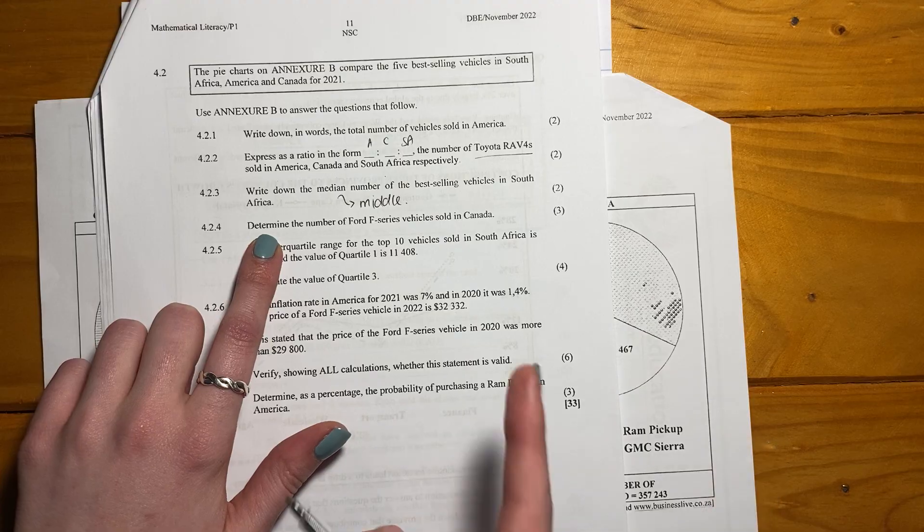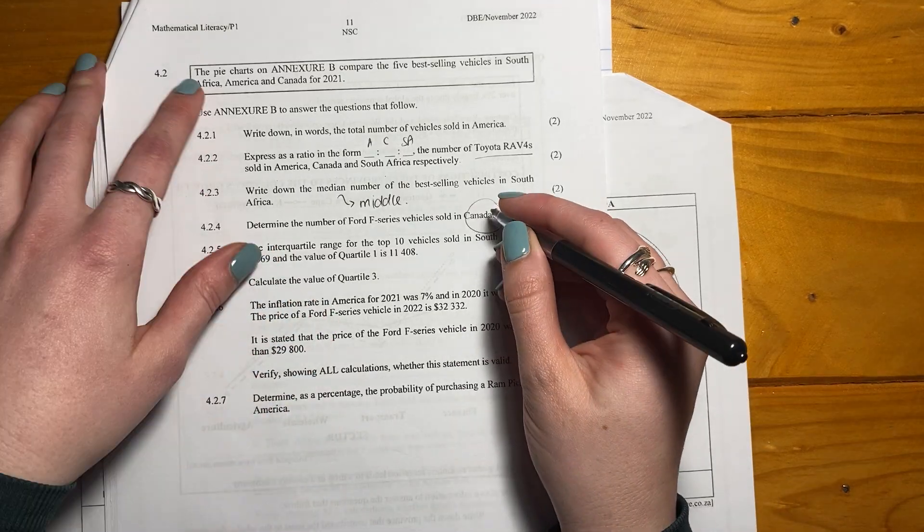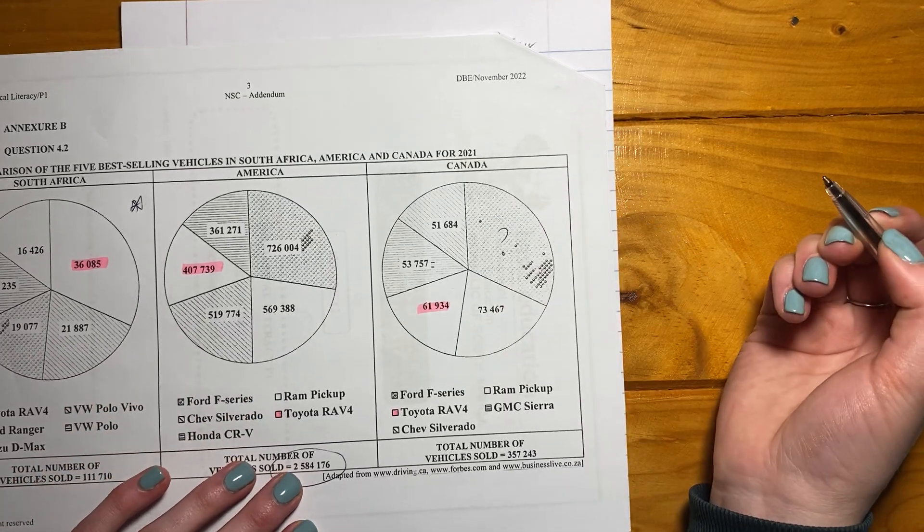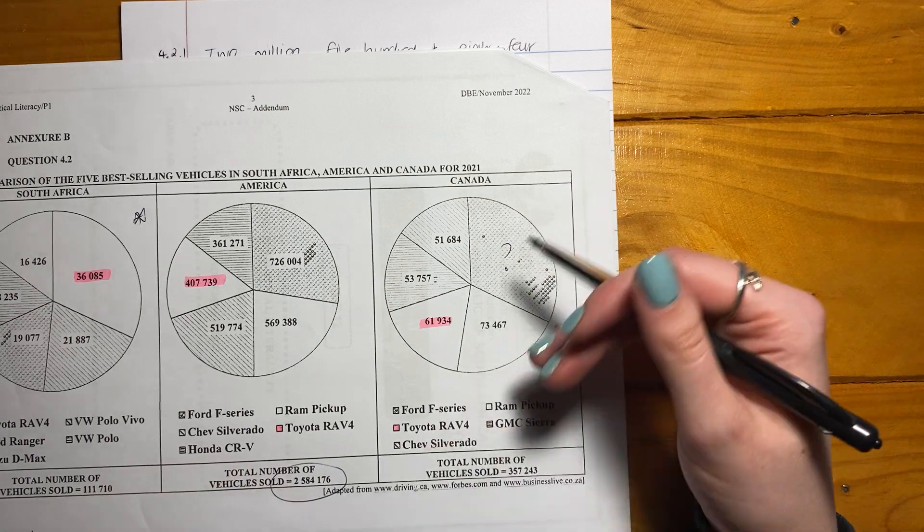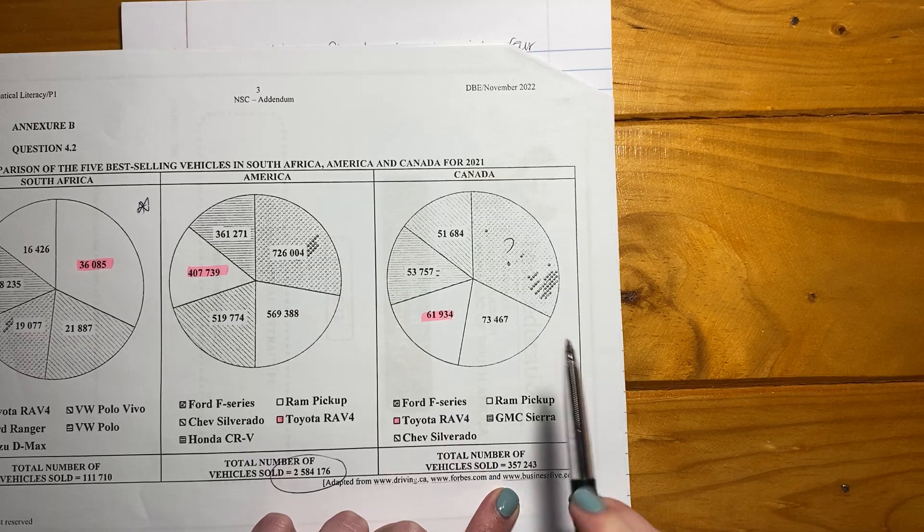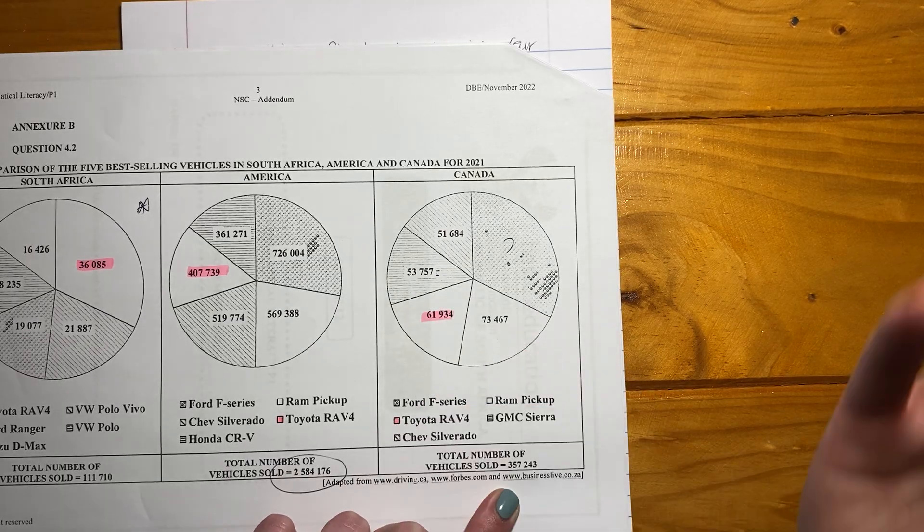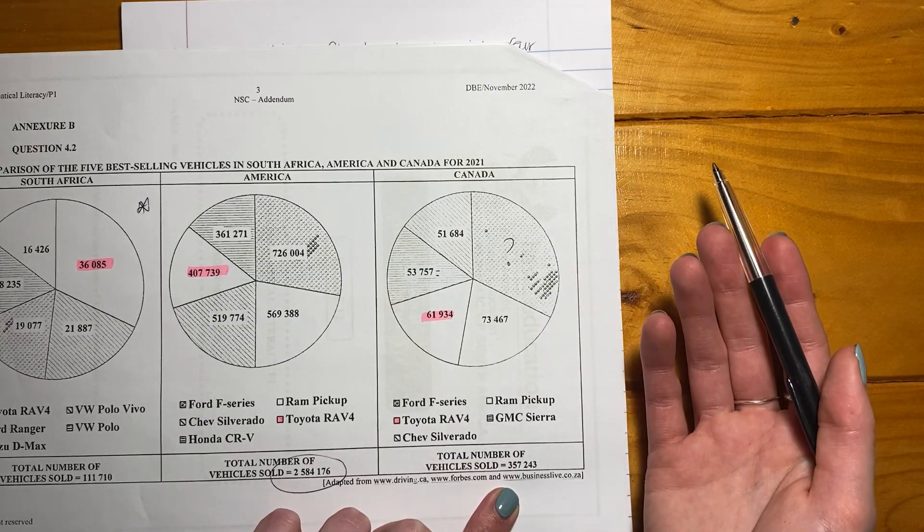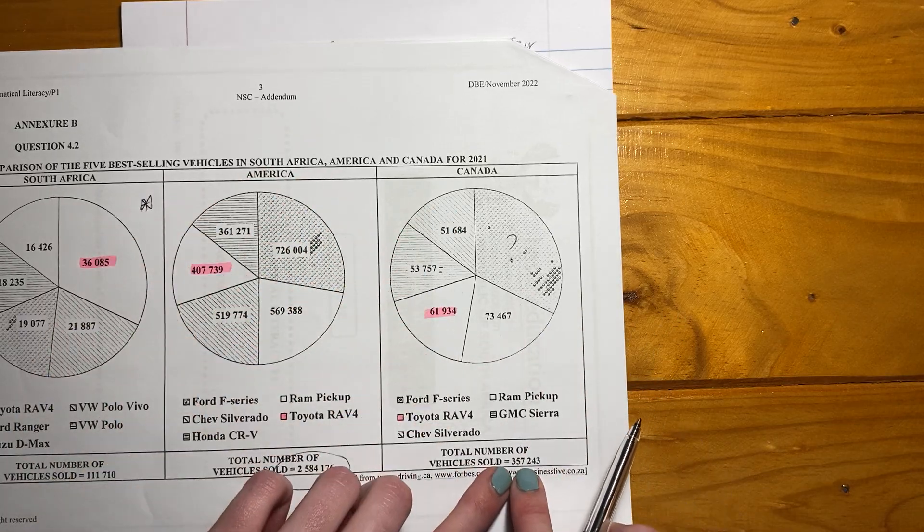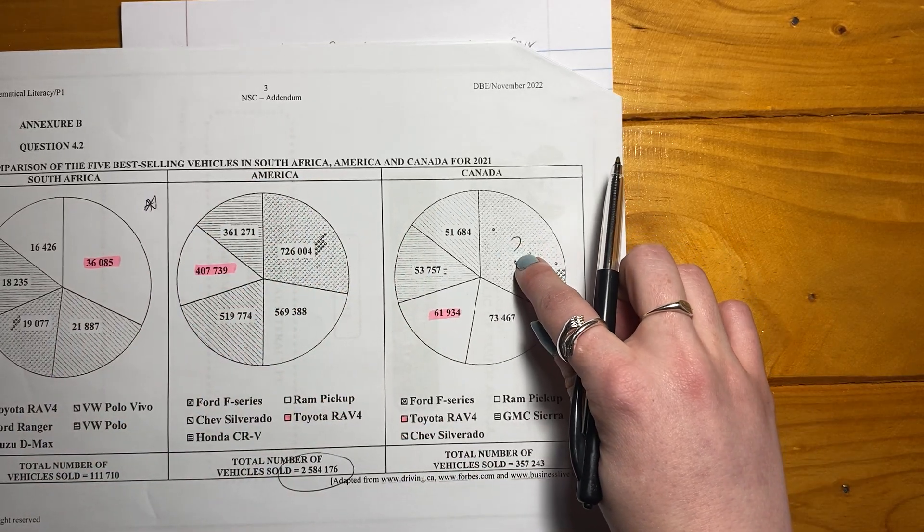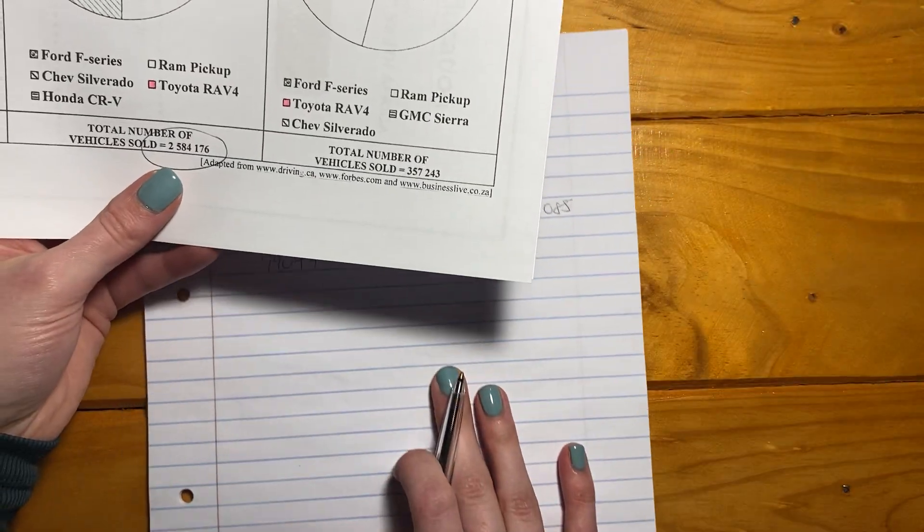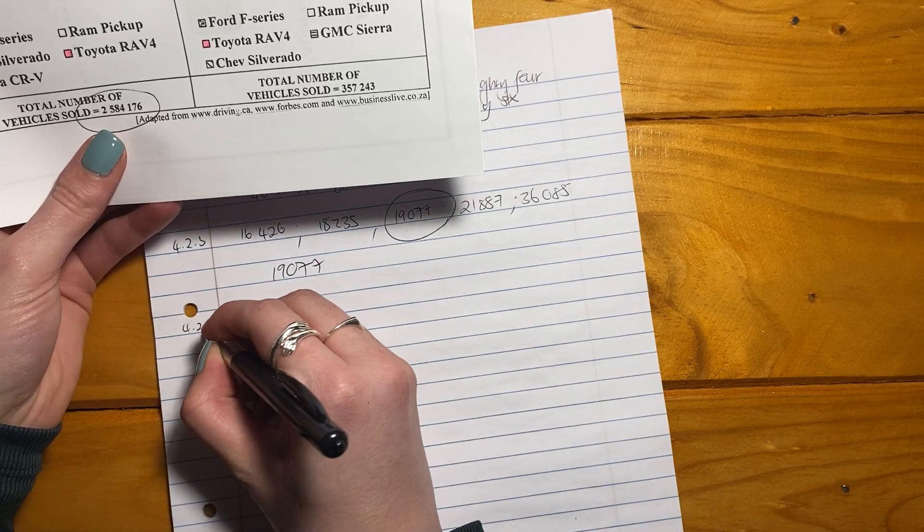Let's just make sure that we're getting these easy marks. Determine the number of Ford F-Series vehicles sold in Canada. So it says Ford F, and oh, that's a little bit tricky because we don't have anything there. So they're wanting us to work this out, given the information that we have. It's not too difficult because we have the total number. So now if we have the total number of cars and we subtract all of these amounts that we have here, whatever's left has to be the Ford F-Series.